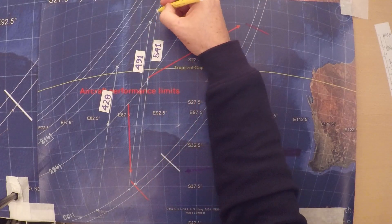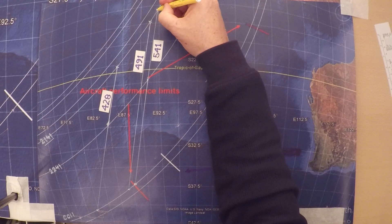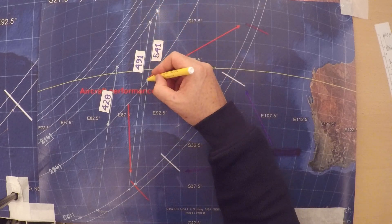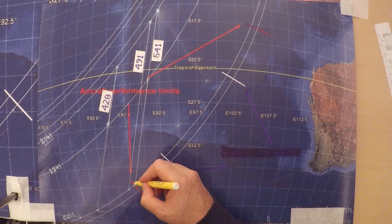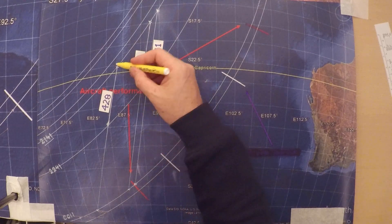So if the aircraft crossed the fourth arc at this point, the only thing it did is to travel down this line at five hundred and forty-one knots. Likewise for these other ones.